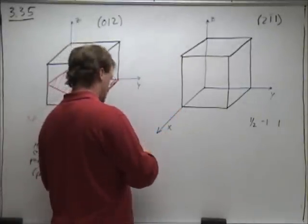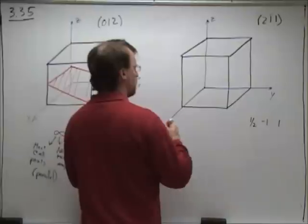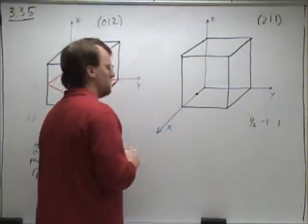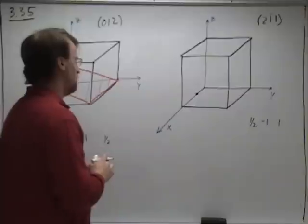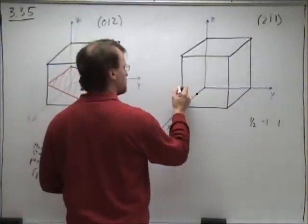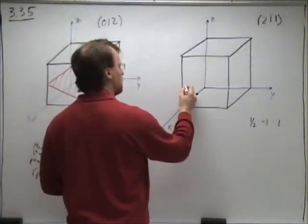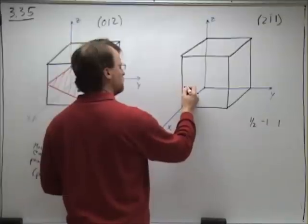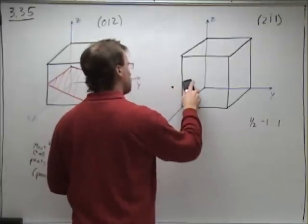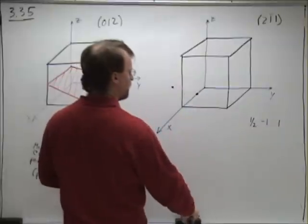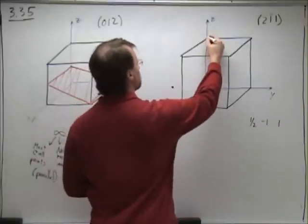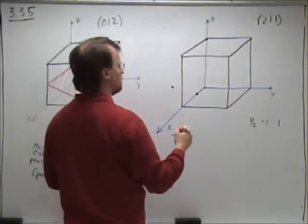So on the x plane, we have an intercept of 1/2. On the y axis, we have an intercept of minus 1. And for the z axis, we have an intercept of 1.